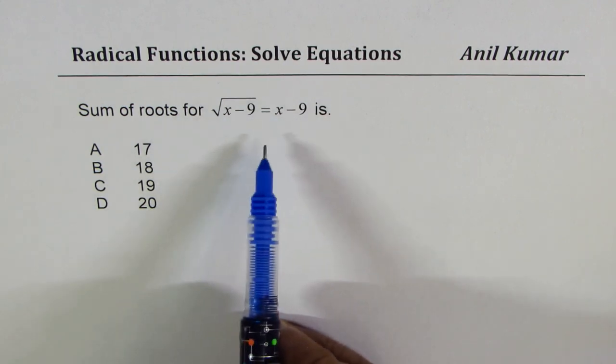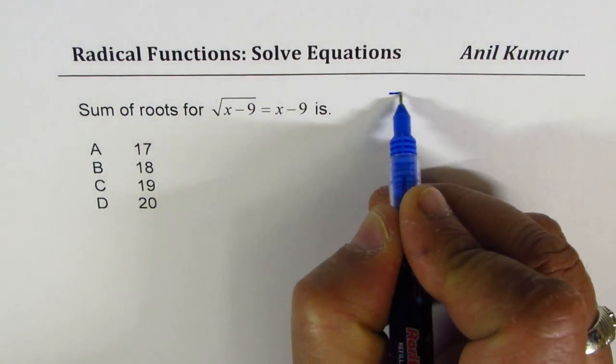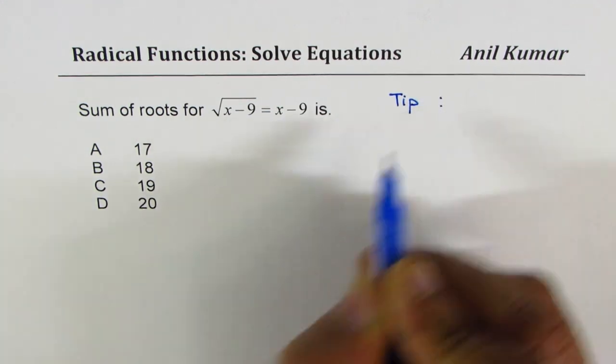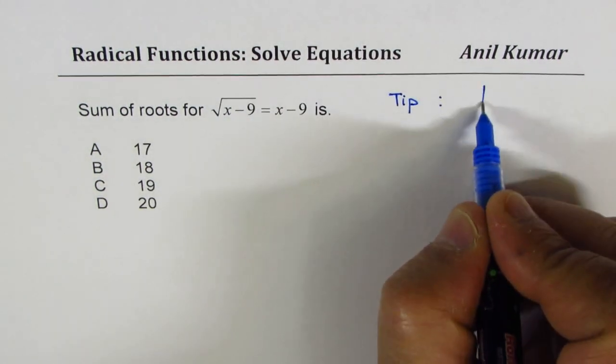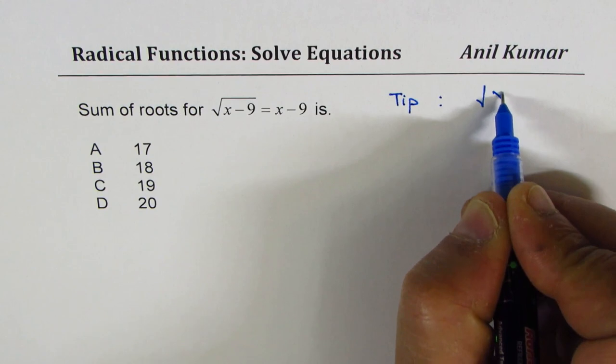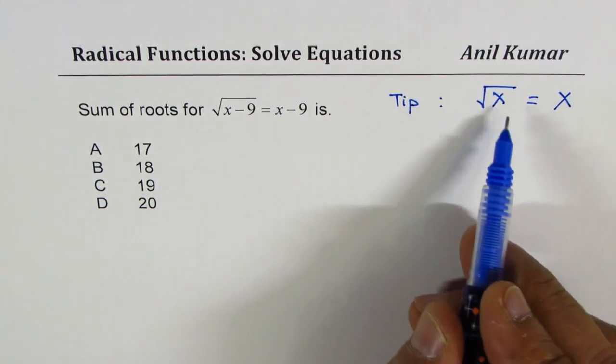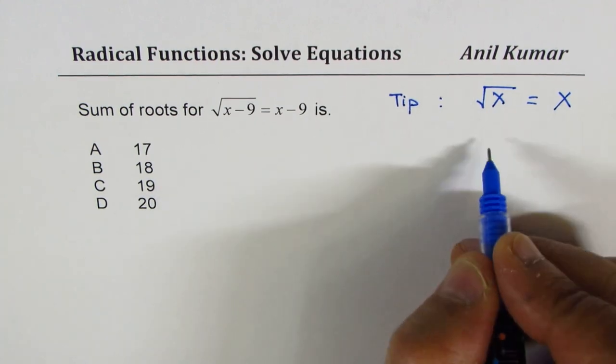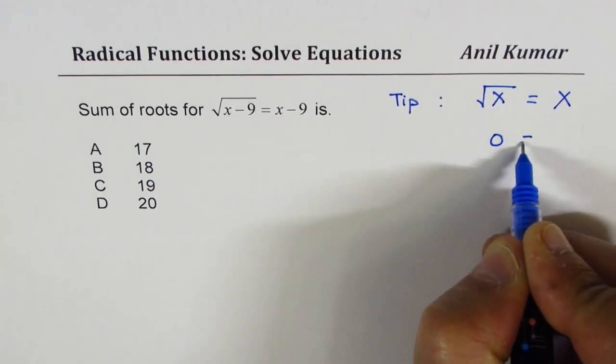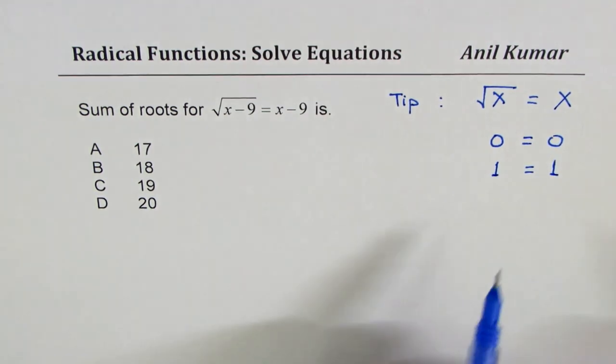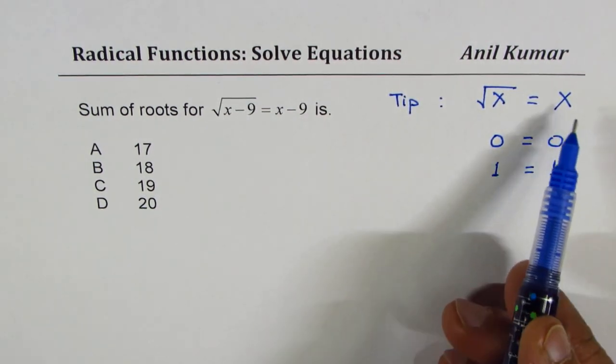Well, to solve such questions, the trick is, let me give that tip: if you have something like square root of something is equal to that thing, now this equation is always true for 0 equals 0 and 1 equals 1. These are the two values whose square root is same as the number itself.